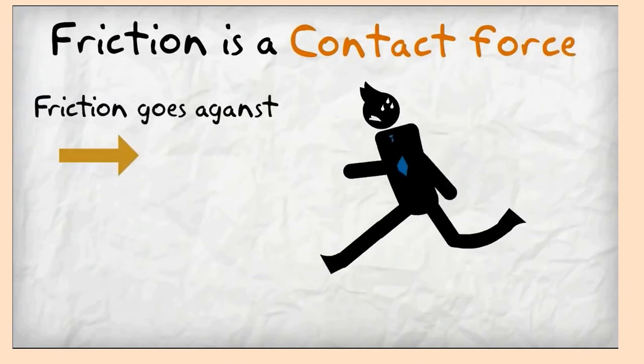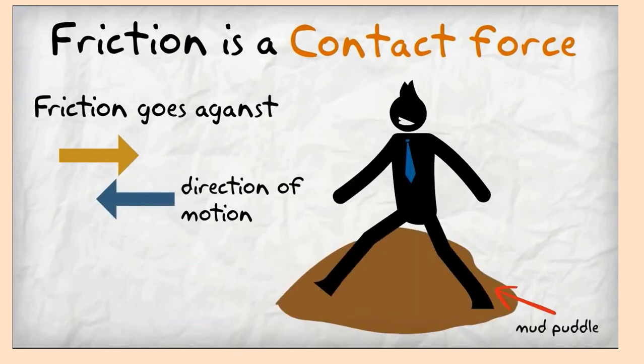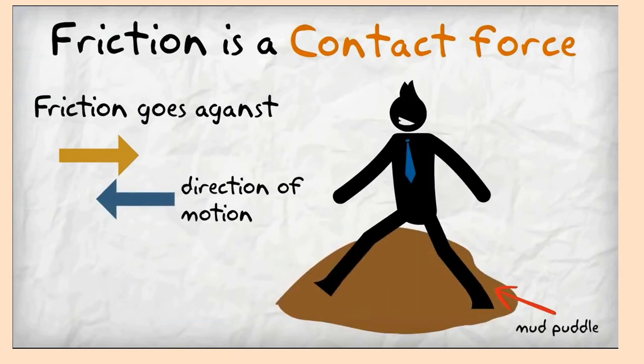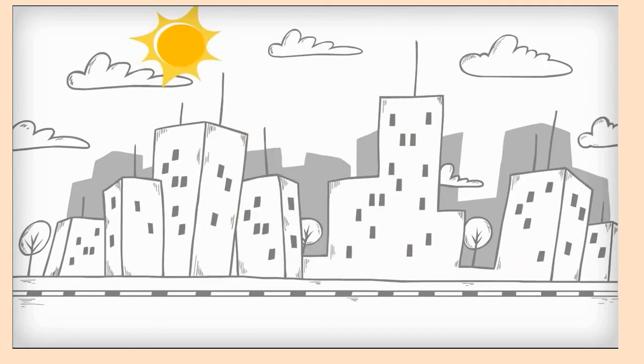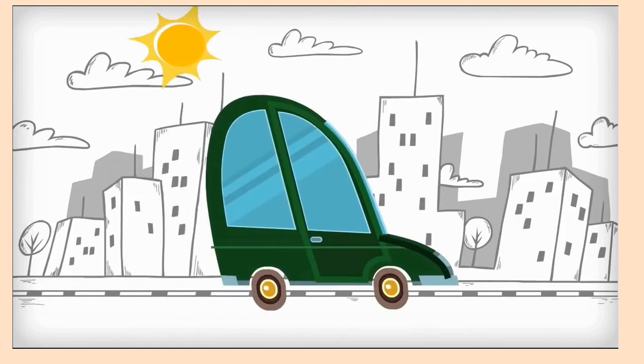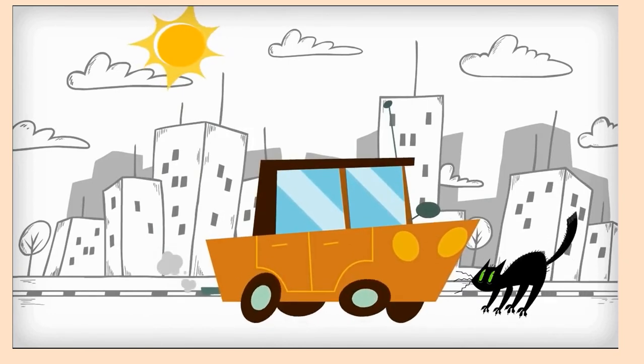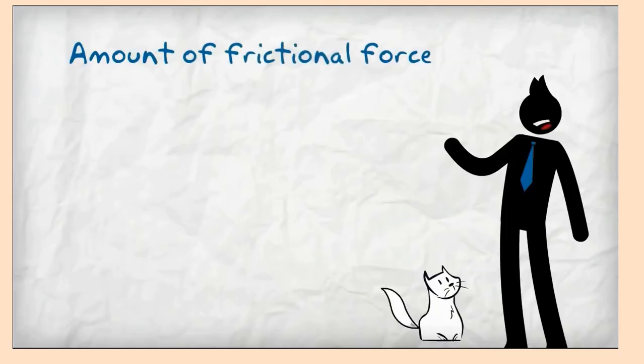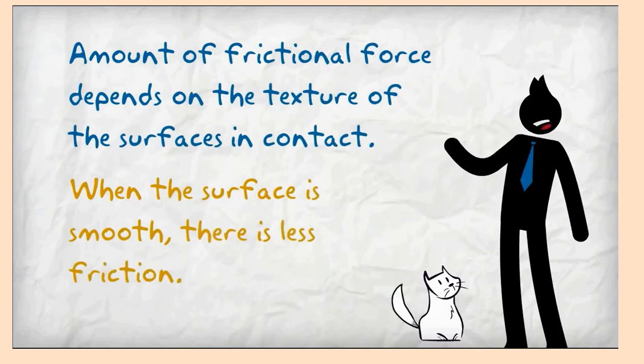Friction is also a form of contact force. Friction goes against motion. Even though friction slows things down and makes movement difficult, there are many things we could not do without friction. Friction holds us to the ground, allowing us to walk without slipping. Friction causes the surface of a car to brake in time to prevent accidents. The amount of friction or force depends on the texture of surfaces in contact. When the surface is smooth, there is less friction.